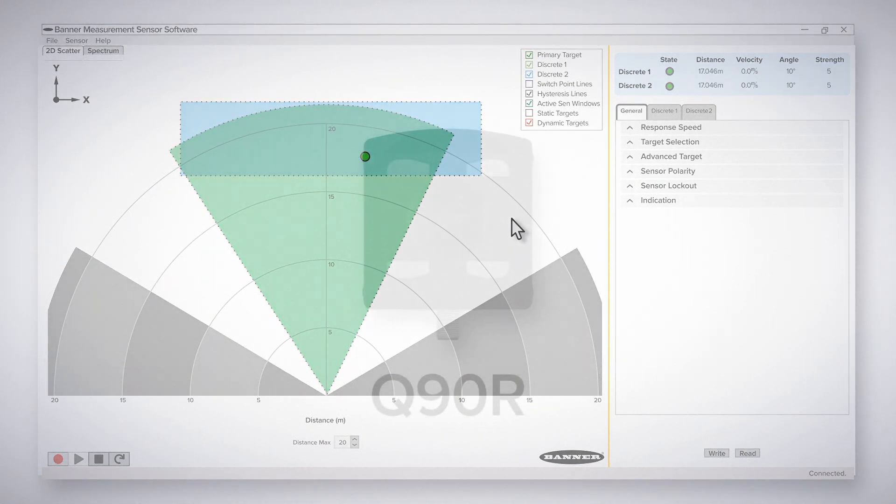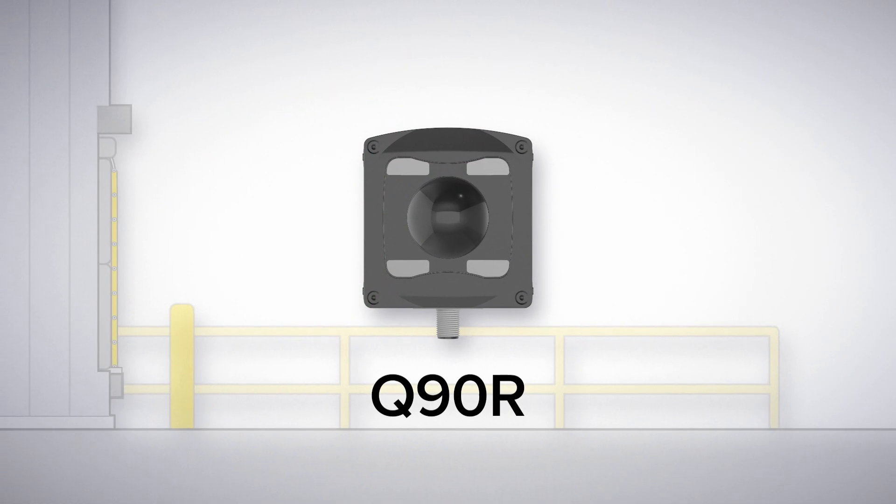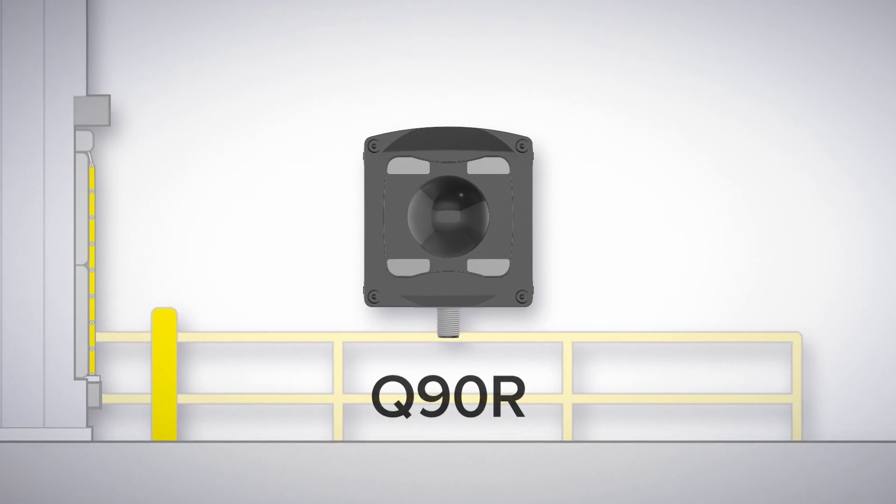Now, let's look at some use cases where the Q90R series excels. The Q90R family is a flexible option for vehicle monitoring and loading docks.